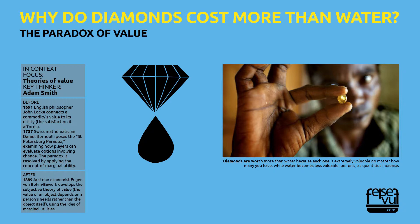Marginal Utility. This paradox can be explained with the help of a concept known as marginal utility — the amount of pleasure gained from the last unit of the commodity consumed. In 1889, the Austrian economist Eugen von Böhm-Bawerk explained it through the example of a farmer with five bags of wheat. The farmer's use of the wheat ranges from important — feeding himself — to trivial — feeding birds.